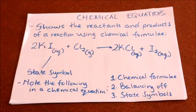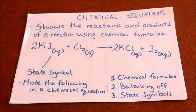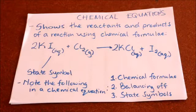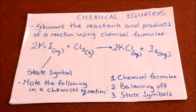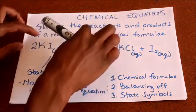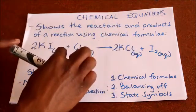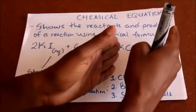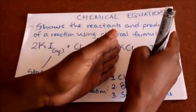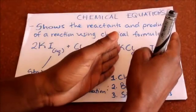So what are really chemical equations? Chemical equations simply show the reactants in your reaction and also the product of a reaction using the chemical formula. The reactants are what will be used up in a chemical reaction, and the product is what will be formed at the end of the reaction.